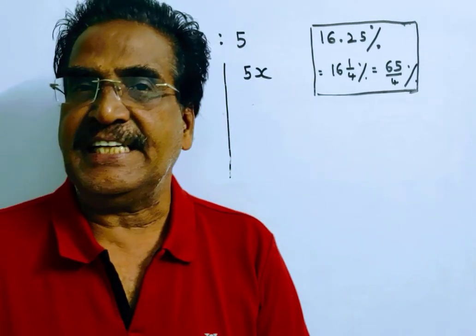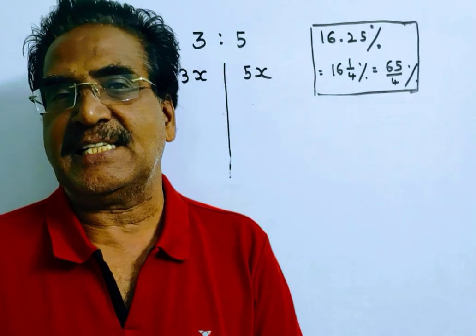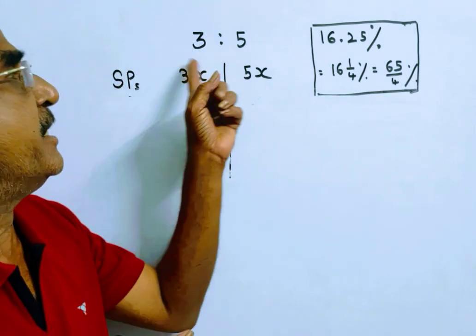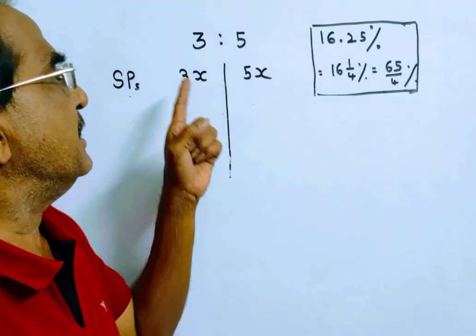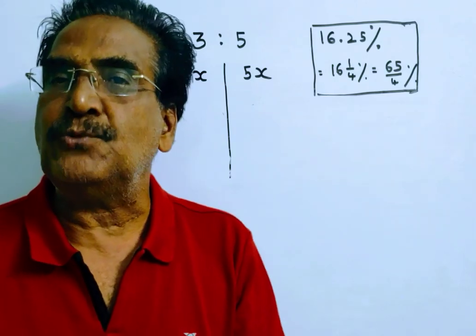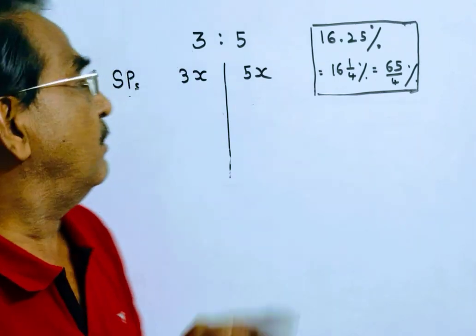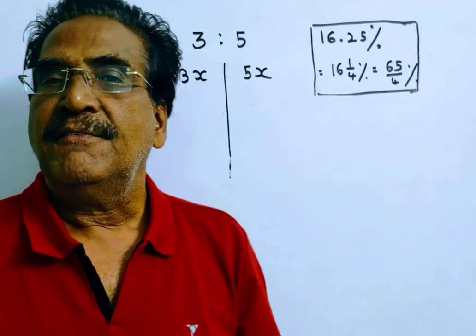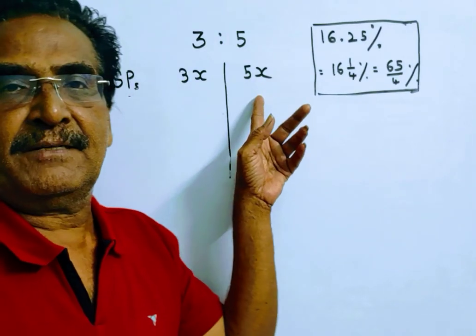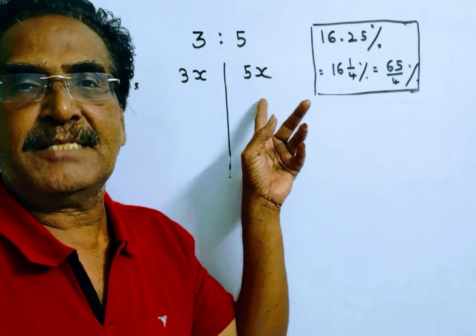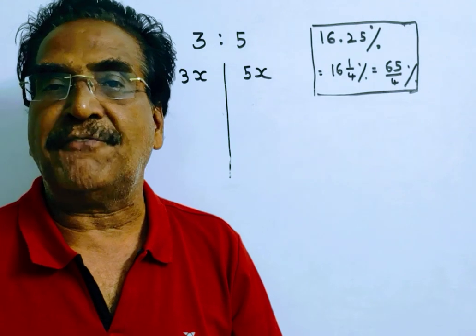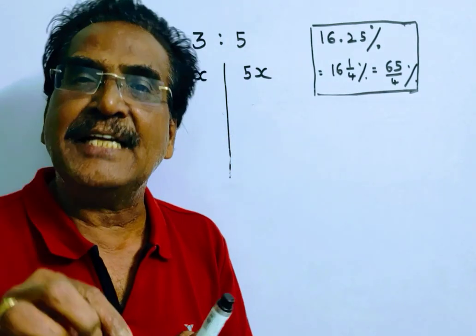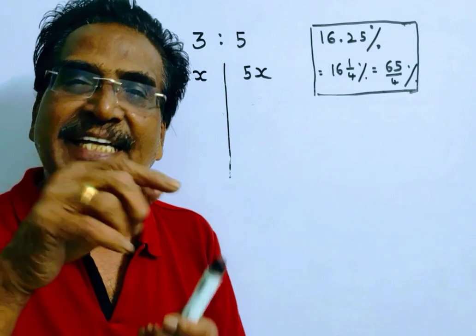It is given that the selling prices of the two salesmen are in the ratio 3:5. That means the selling prices of the two salesmen are 3x and 5x. The second salesman calculated profit on selling price. So now let us see the profit earned by the second salesman.